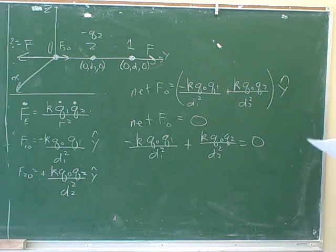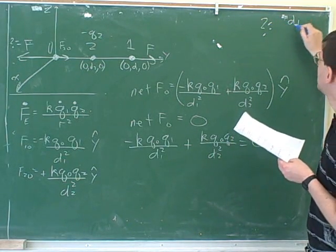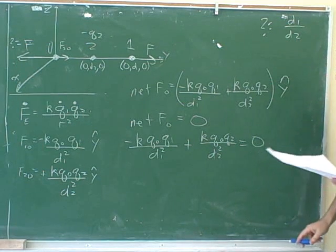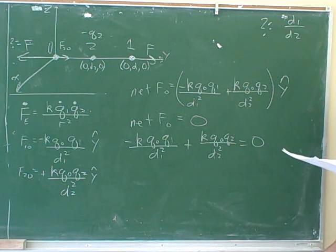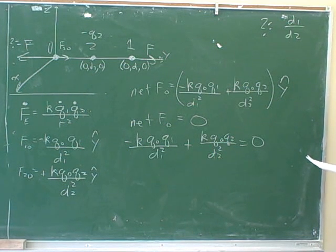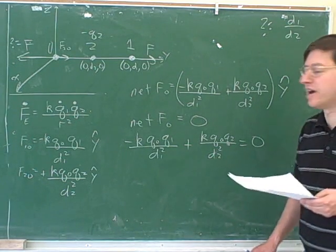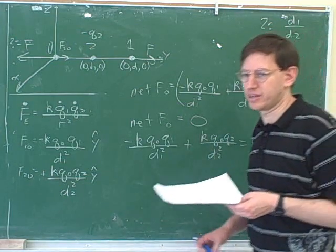How can we start simplifying this algebraically? What's the question asking us for? The ratio of d1 and d2. That means we need to get this ratio by itself in the equation. One fraction on one side and one on the other — I think that's the very best thing to do here. Let's do that.